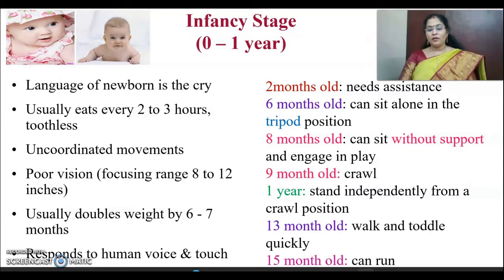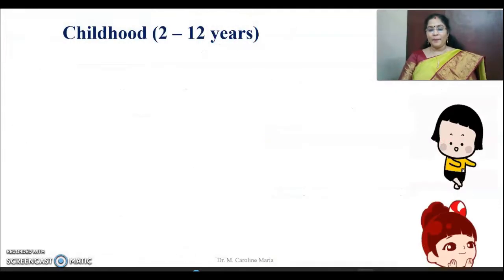A thirteen-month-old child can walk and toddle quickly — neither walk nor run properly. A fifteen-month-old baby can run.